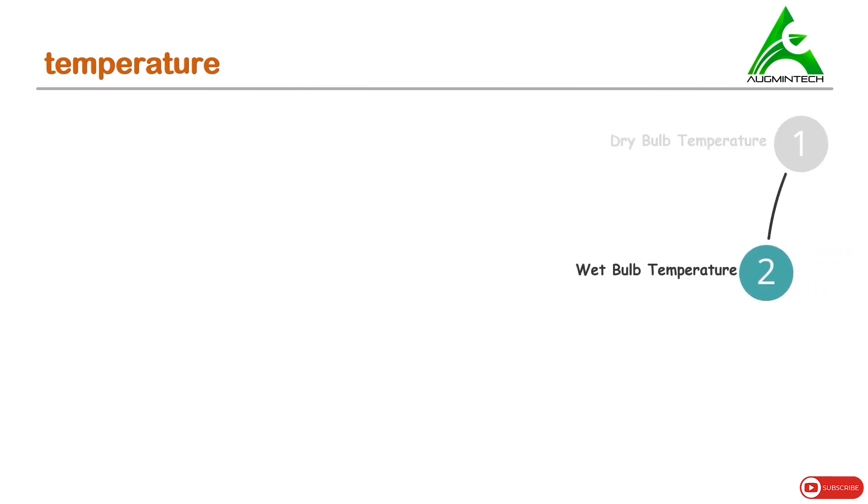Another type of temperature is wet bulb temperature. To understand this, let's say there's a thermometer giving some reading placed in air. This is the dry bulb temperature reading as studied. Now if we place a wet cloth, which is also known as wick, on the bulb of the thermometer, and if some unsaturated air is passed through this thermometer, the water in the wick converts to water vapor and the reading of the thermometer falls. This reading is known as wet bulb temperature, and the difference between these two readings is known as wet bulb depression.